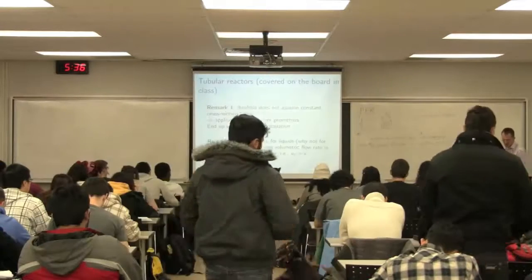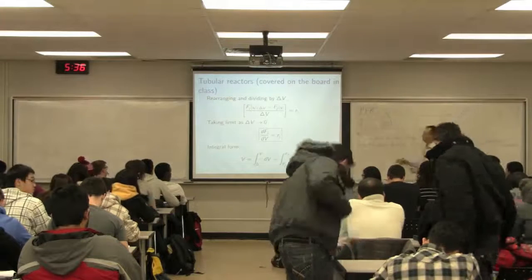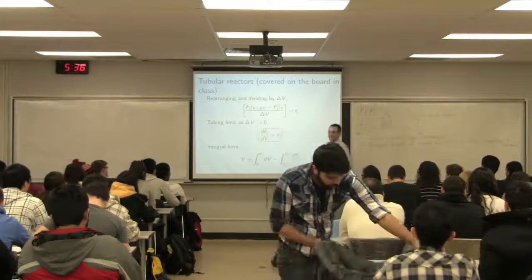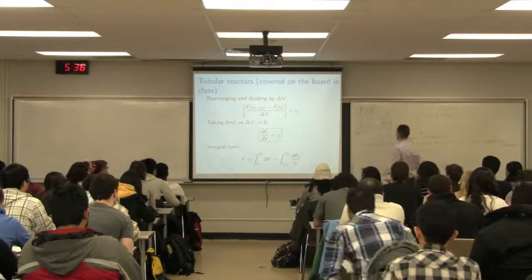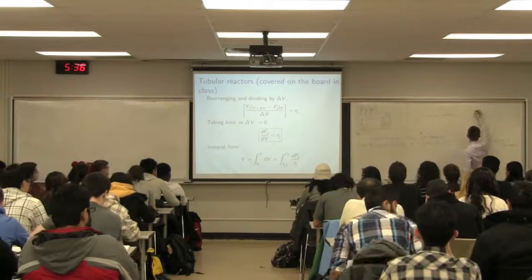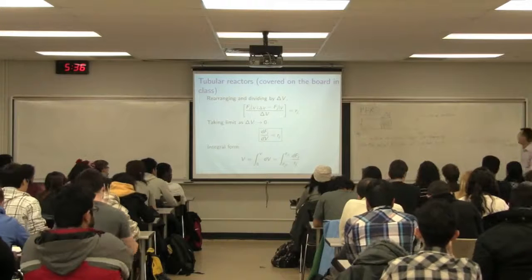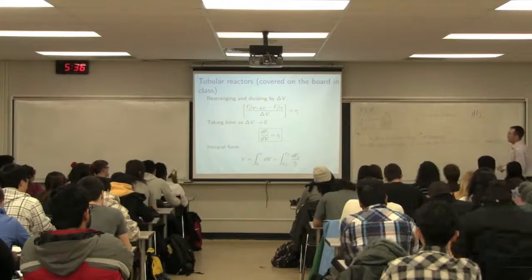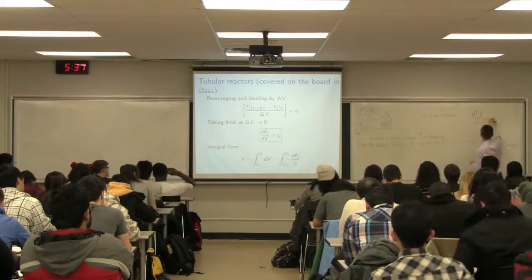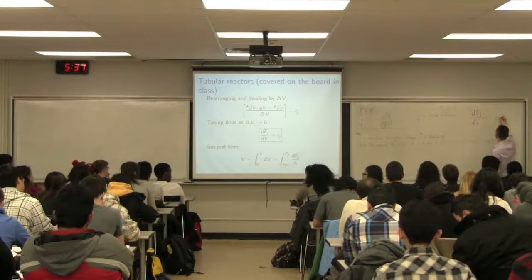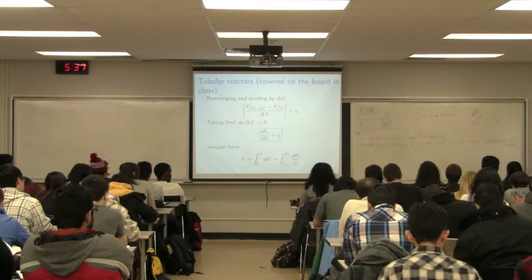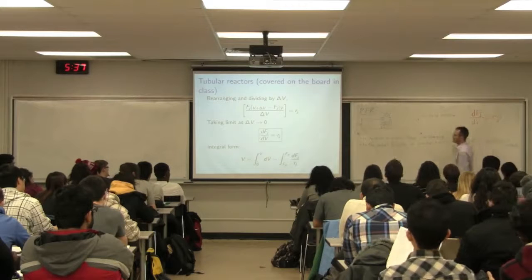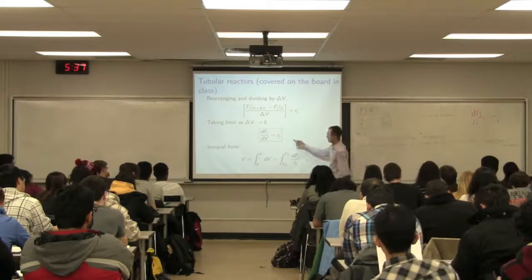Let me recap from last class — I have it in the slides now electronically and we won't go through the derivations again. Taking the limit as a plug width tends to zero, we can derive this important equation. This equation is: the rate of change of the molar flow Fj with respect to volume dV is equal to the rate of formation of species J. That was our design equation. I can integrate this equation as well — this is in differential form, but in integral form I can integrate.